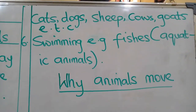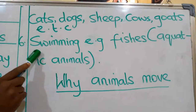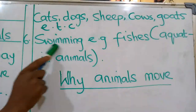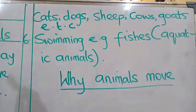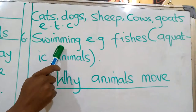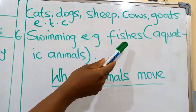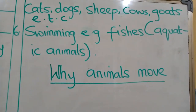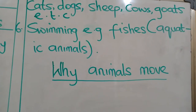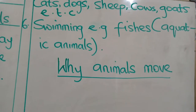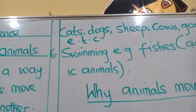Number six: by swimming. That is another way animals move. Example: your fishes, or aquatic animals. Aquatic animals are animals that live in water.